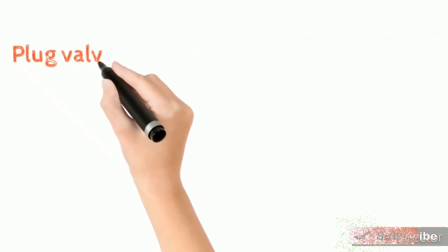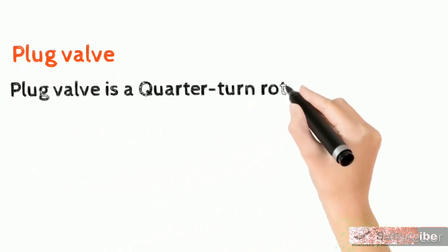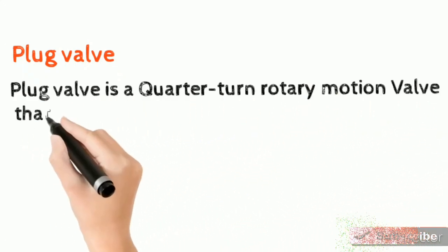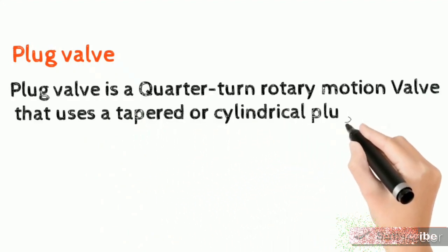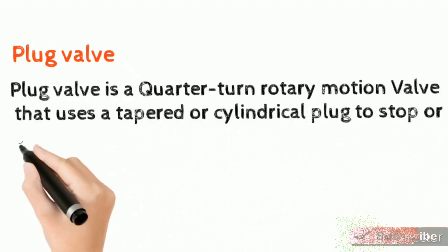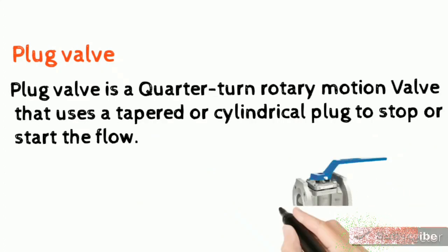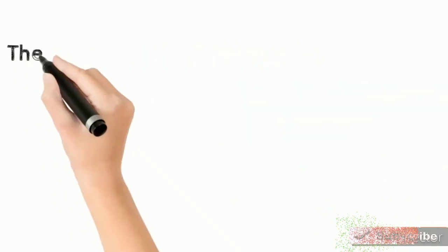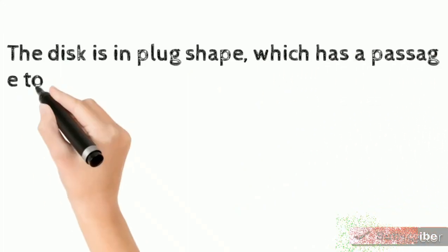Plug valve is a quarter turn rotary motion valve that uses a tapered or cylindrical plug to stop or start the flow. The disc is in plug shape, which has a passage to pass the flow.